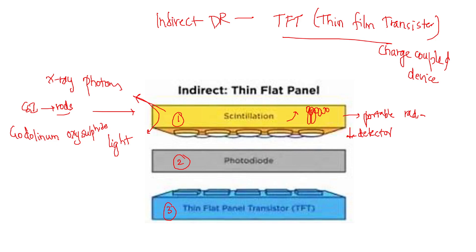The scintillation layer contains elongated crystals of very small size, smaller than the pixel size. The light produced by these crystals is reflected and directed towards the photo diode. A thick layer of scintillator is used to increase detector efficiency. The x-ray photons are absorbed and they release almost 3000 light photons, which are mostly present in the green part of the spectrum.